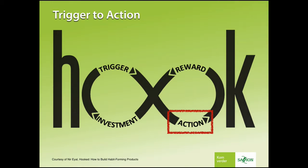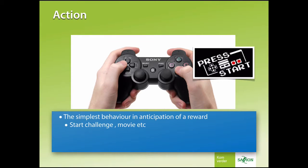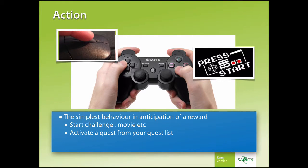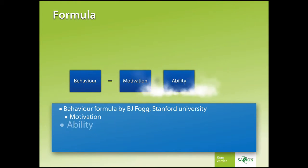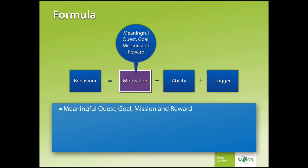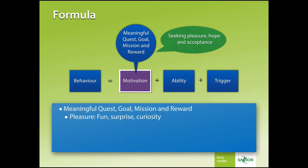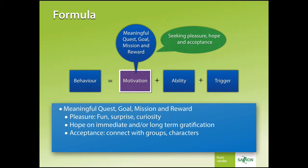Action is the simplest behavior in anticipation of a reward. If you press start, you expect to have a good game. If you activate a quest from your quest list, you will expect that to be doable and rewarding. The desired behavior is that the player accepts the challenge. BJ Fogg from Stanford University made a formula: if you want to control behavior, you have to consider motivation, ability, and trigger. You motivate a player by presenting a meaningful quest, goal, mission, and reward. The player is seeking pleasure, fun, surprise, and curiosity. There is hope for direct or long-term gratification, and acceptance is about connection between characters, NPCs, and the world.